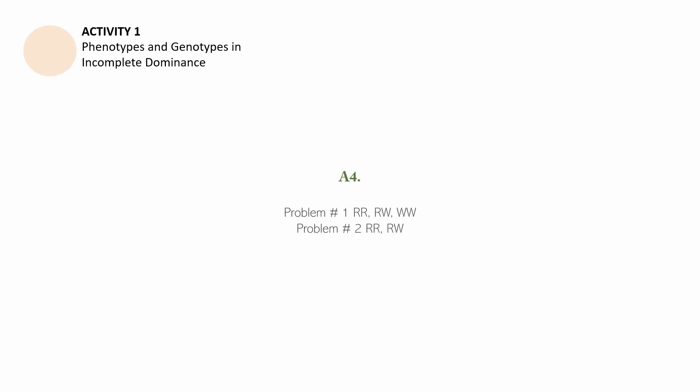Answer to question number 4, problem number 1 is RR, RW, and WW. Problem number 2: RR and RW. That ends activity number 1, Phenotypes and genotypes in incomplete dominance.